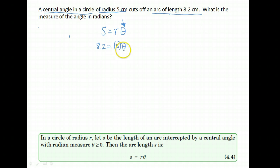That's our angle measure. To get it by itself, it's times by 5. We just divide both sides by 5 and we've got our answer. It's 1.64 radians.